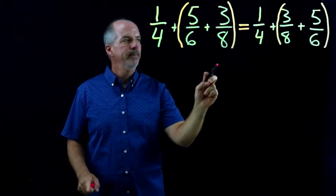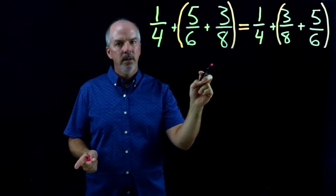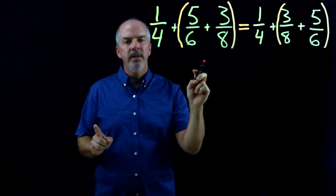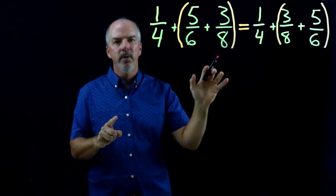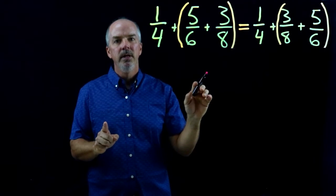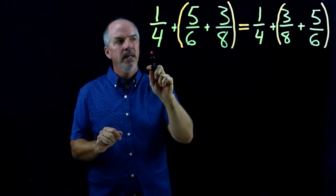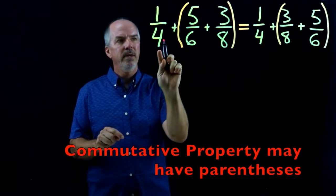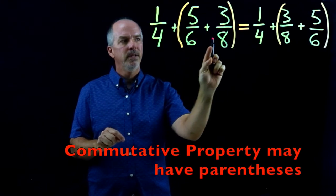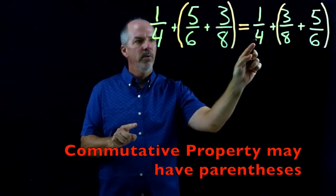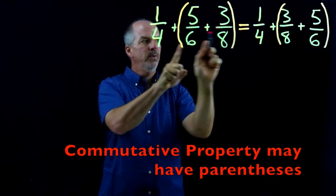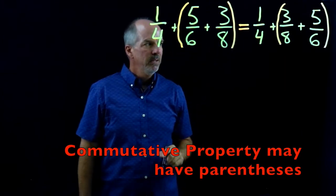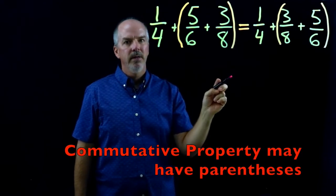Let's look at this problem. We have parentheses. Now a common mistake is to assume that when you have parentheses in this type of problem, that it's going to be associative. Remember for associative it has to be in the same order. In this case, we have one-fourth, five-sixths, three-eighths, and then we have one-fourth, three-eighths, five-sixths. So the three-eighths and the five-sixths are switched, which means that this is the commutative property for addition.